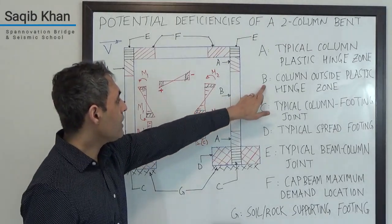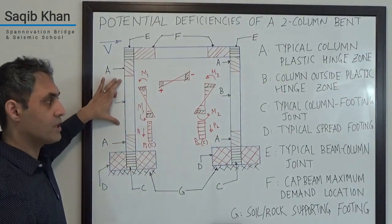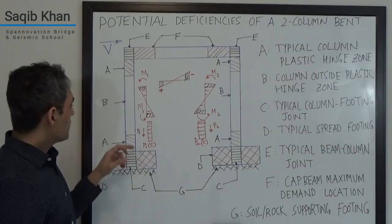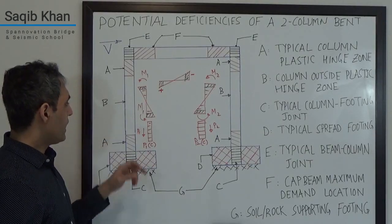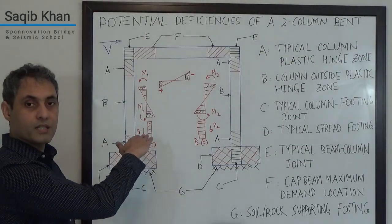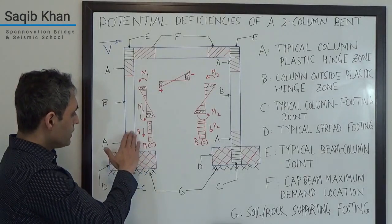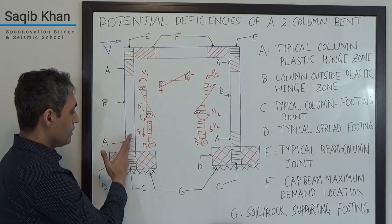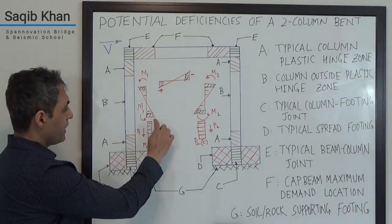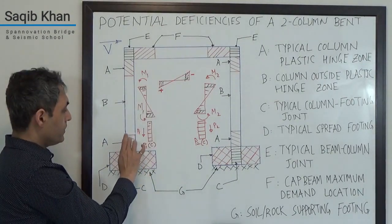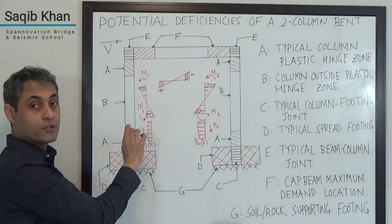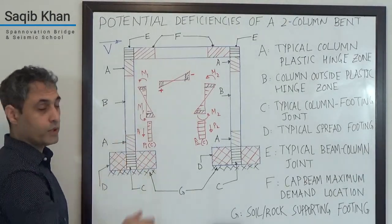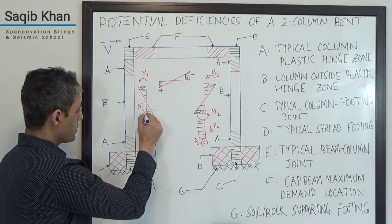Looking at Zone B, this is the column zone outside of the plastic hinges. The significant thing here is that you can have what we call plastic hinge migration if the plastic hinge zones are not detailed appropriately. You have some rebar coming out, your demands are dropping and people in the past have tended to curtail that reinforcement very quickly.